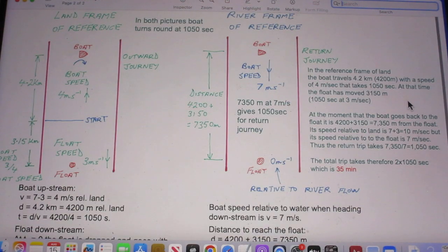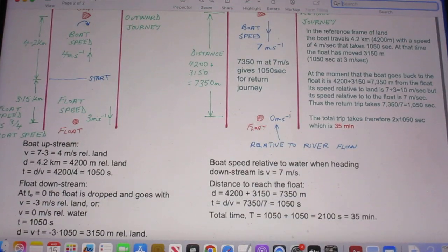Its speed relative to land is 10 meters per second, of course the 7 plus the 3 meters per second. But its speed relative to the float is 7 meters per second. Thus the return trip takes 1050 seconds. So the boat trip takes therefore 2 times 1050 seconds, which is 35 minutes.